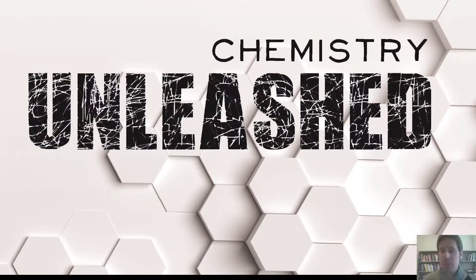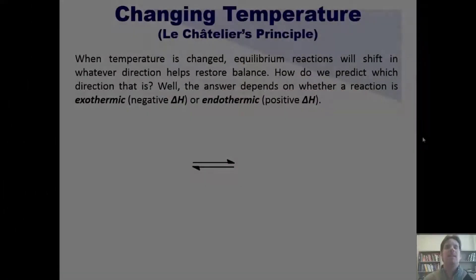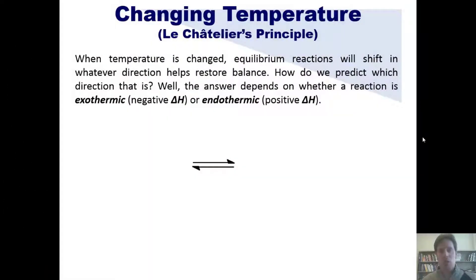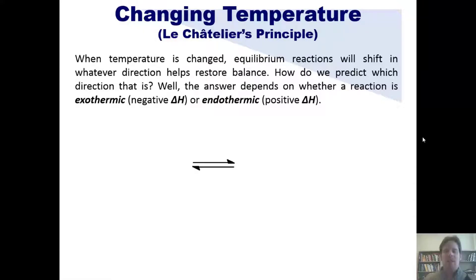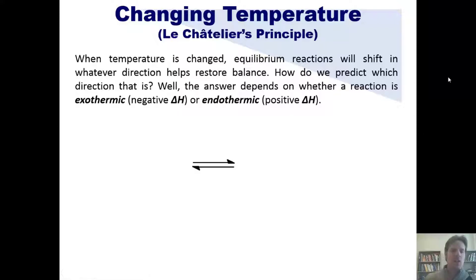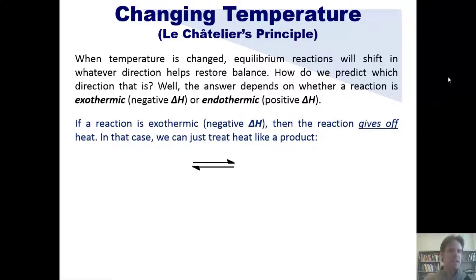How does changing temperature affect equilibrium? When temperature is changed, equilibrium reactions shift in whichever direction helps to restore balance. The answer depends on whether a reaction is exothermic or endothermic. Remember, exothermic reactions have negative delta H values and endothermic reactions have positive delta H values.